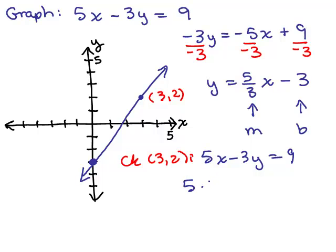We're putting in 3 for x, 2 for y, and seeing if this is true. 15 minus 6 equals 9. Yes. So all is well, looks good. That's the graph of the line 5x minus 3y equals 9.